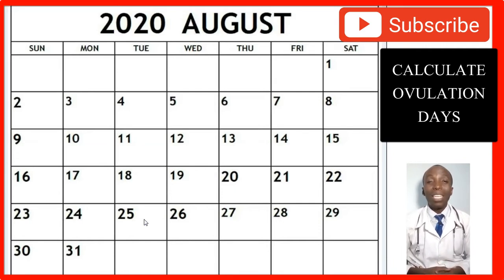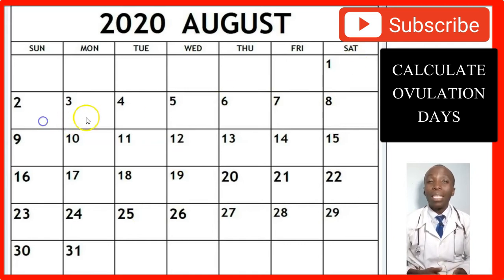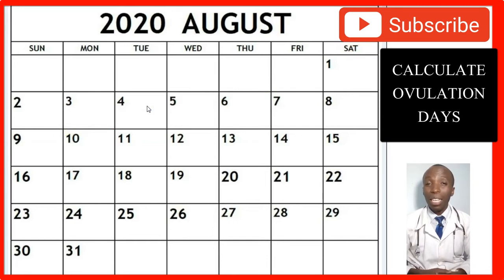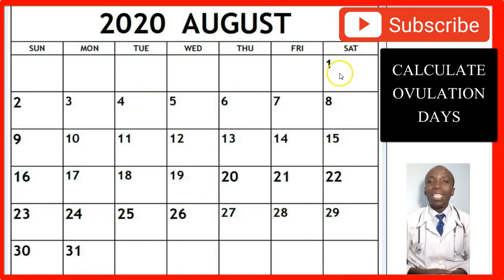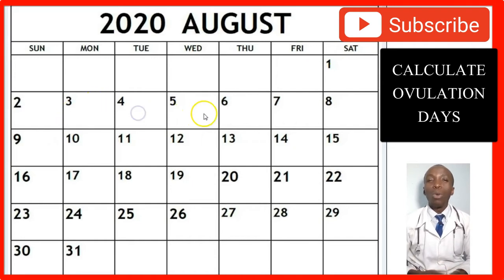To calculate the days you are most likely to be ovulating, you simply count from the 1st day you saw your periods. You say 1, 2, 3, 4 — you finished seeing your periods on the 4th, which is a Tuesday. So we have to go back and count starting with the 1st day you saw your periods: 1, 2, 3, 4, 5, 6, 7, 8, 9, 10.